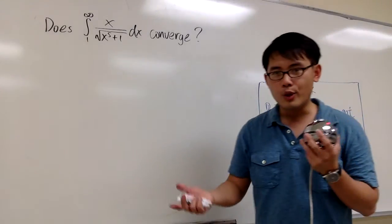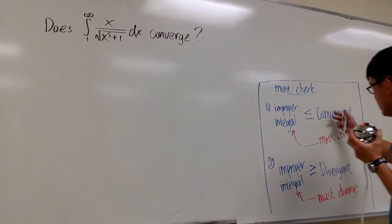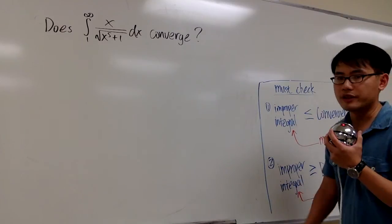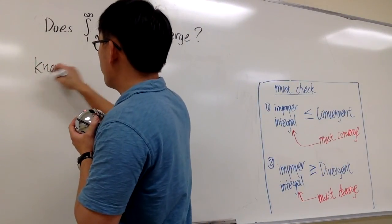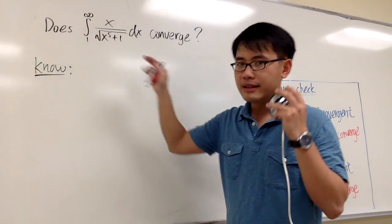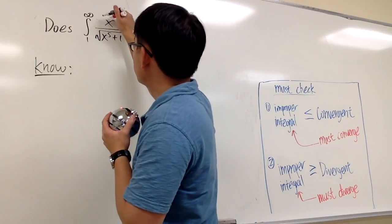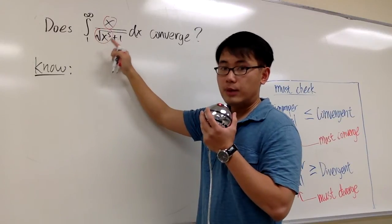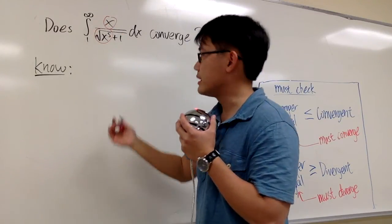I don't have anything I know about yet, so we have to come up with something we know better first — either a convergent or a divergent — and then set the inequality accordingly. So let's pick something we know much better. This is how we can simplify the improper integral: look at the highest power of x on the top and the highest power of x on the bottom, inside the square root. We do that because x is approaching infinity.